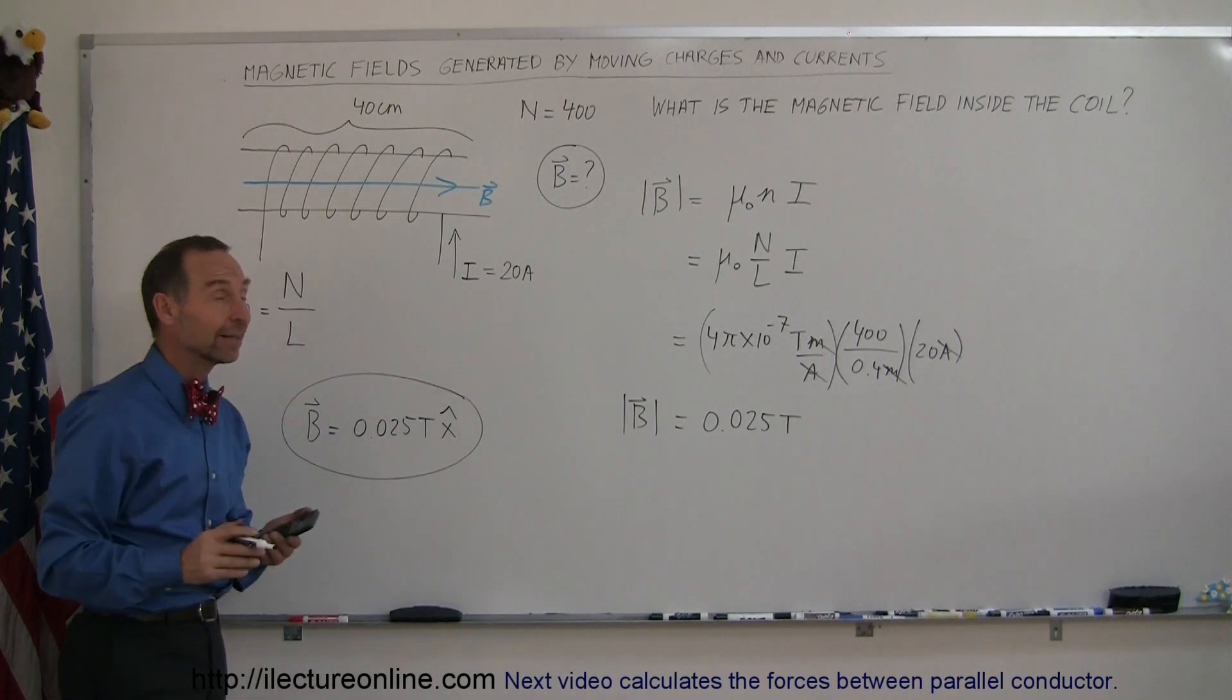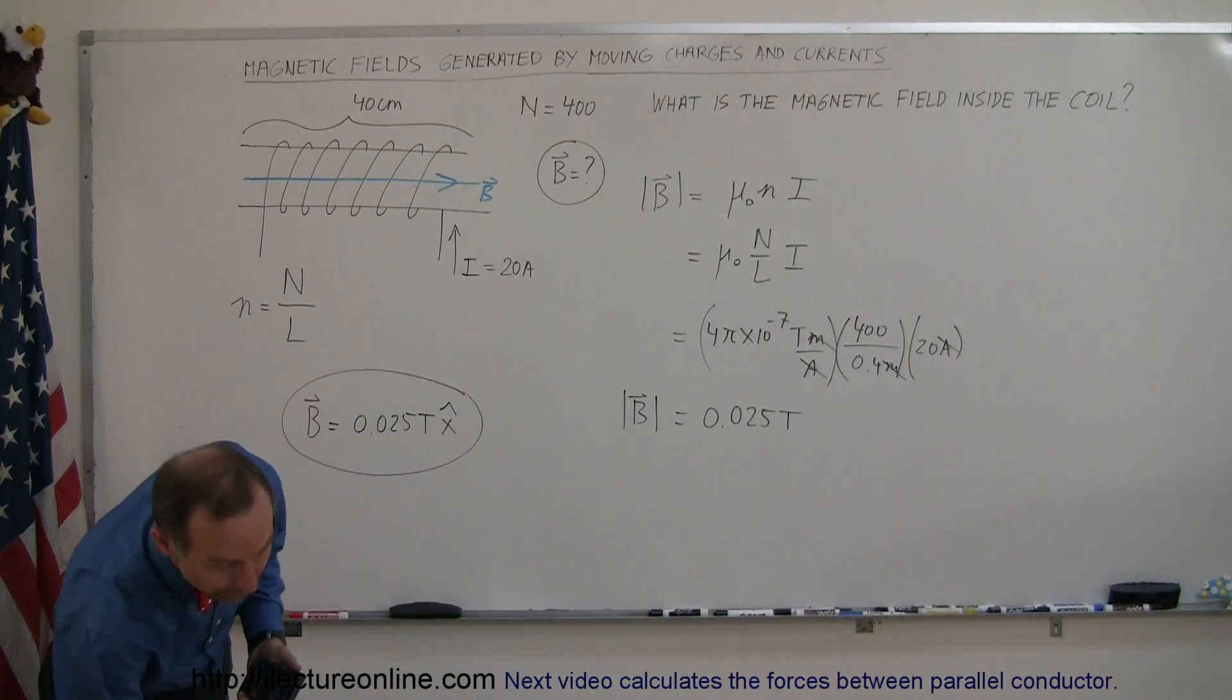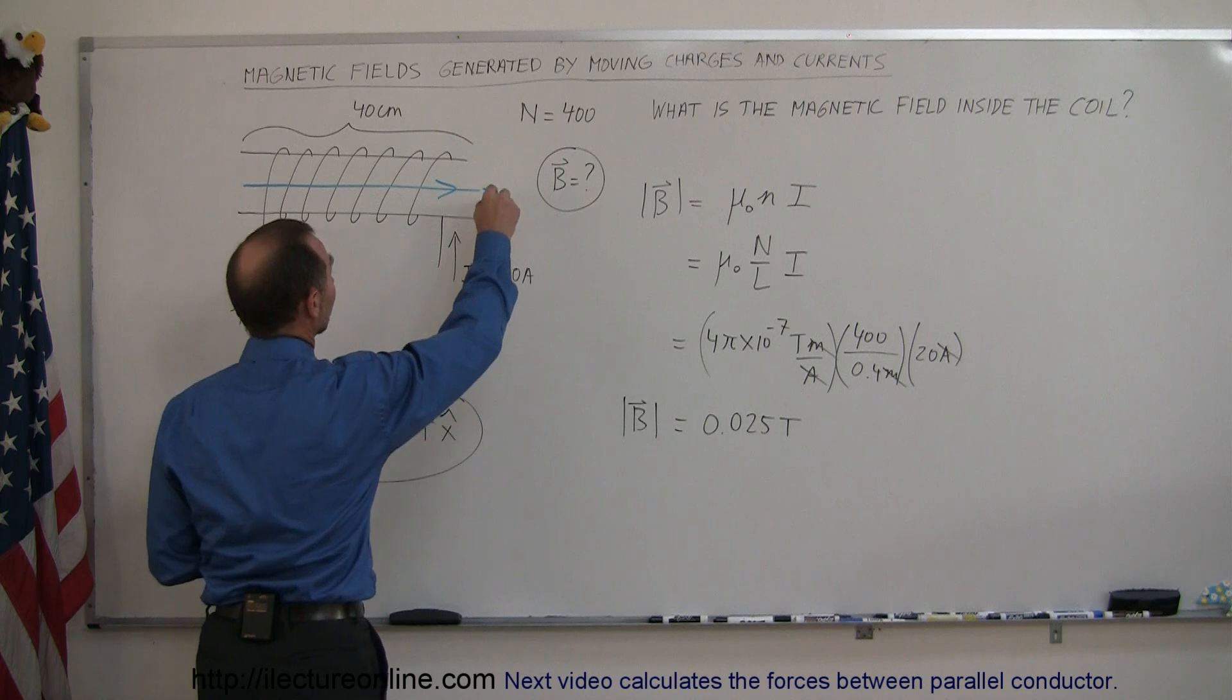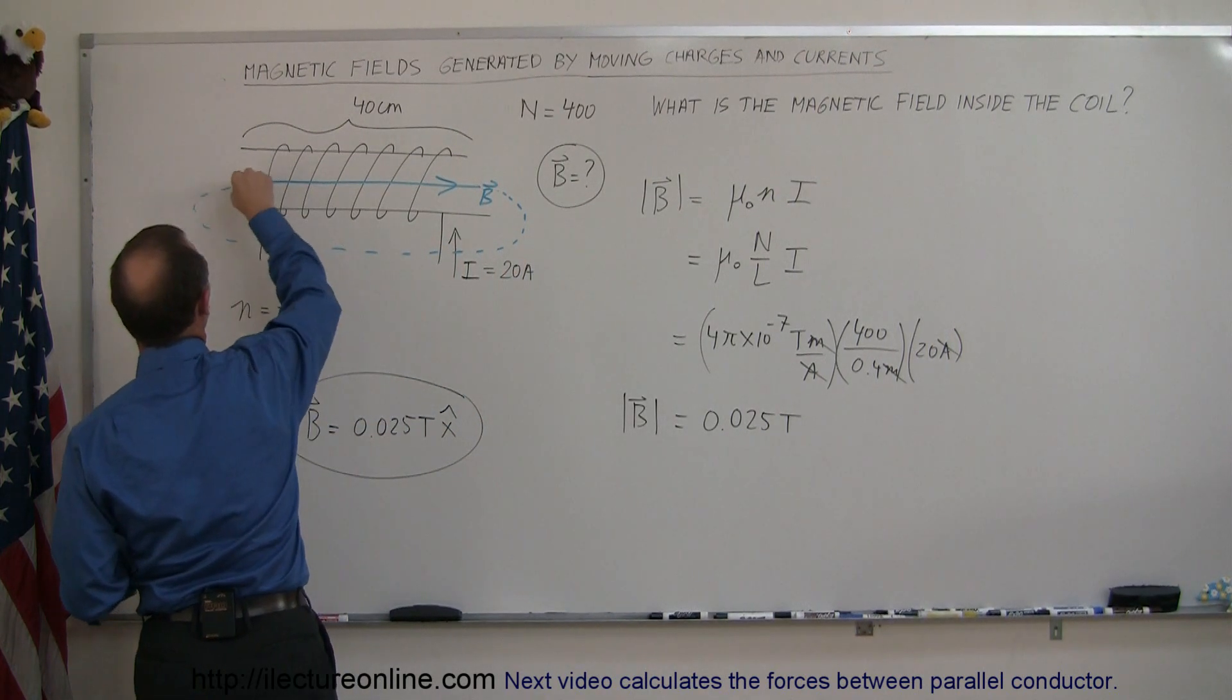Now, what's the magnetic field outside the coil? Well, outside the coil, the magnetic field will loop back and make a complete circle. So the magnetic field will come back this way, go back in here, and like that.